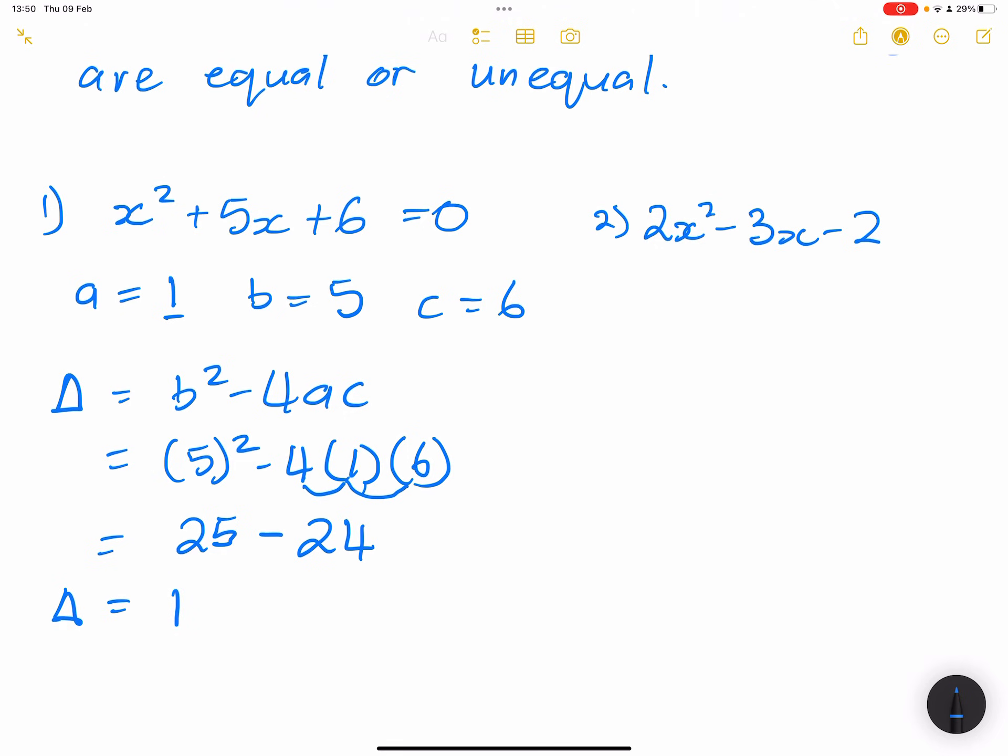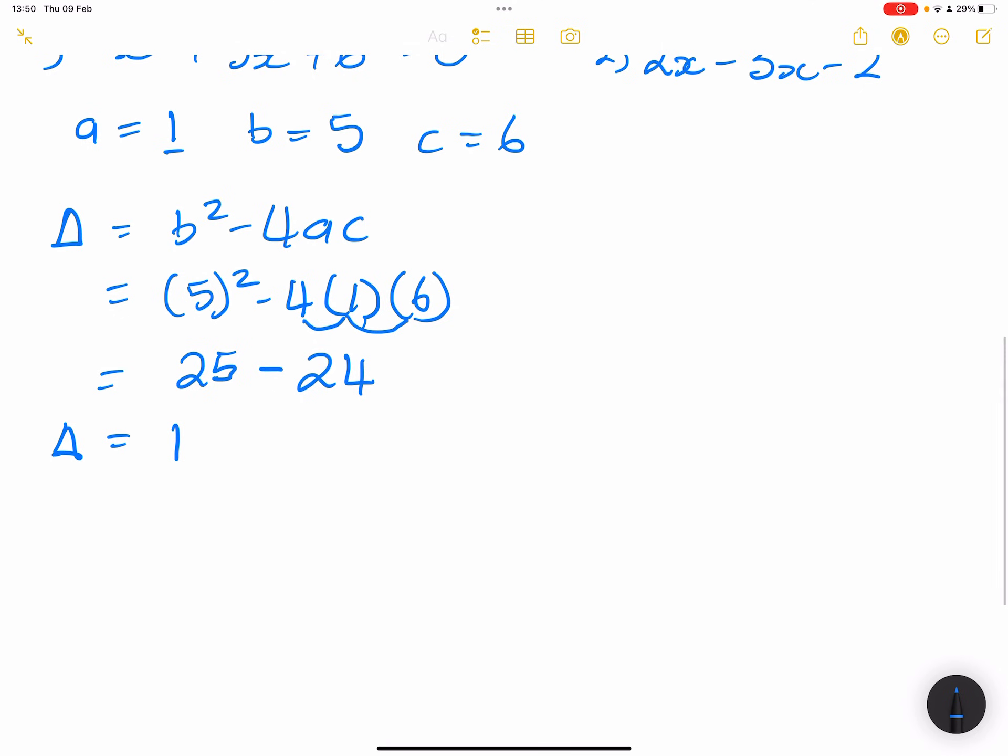So that gives us the value of delta, delta to be equal to 1. Now, so therefore what do we note? First of all, 1 is a positive number, so delta is greater than 0. What does that say to us? It is a real root, so roots are real.